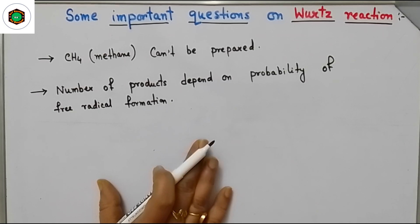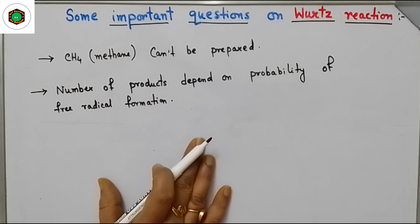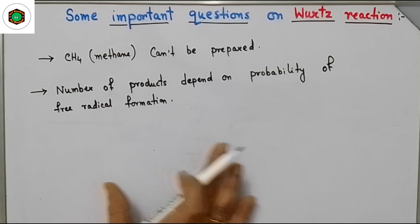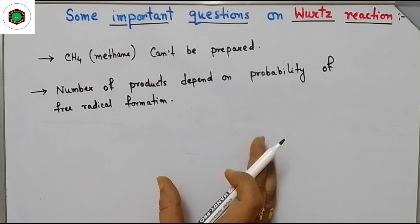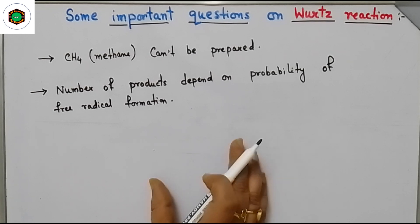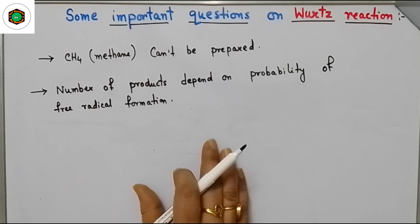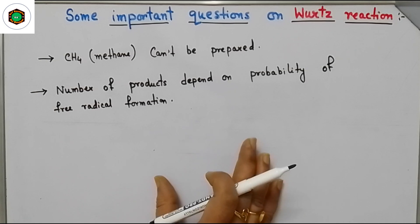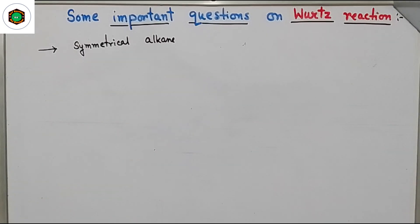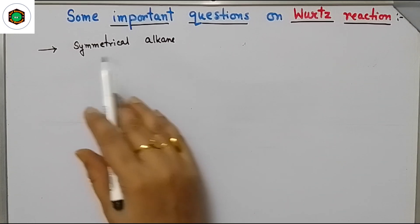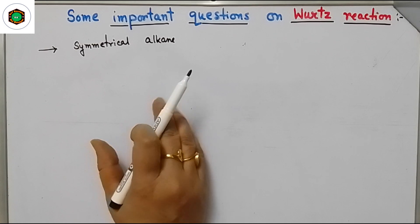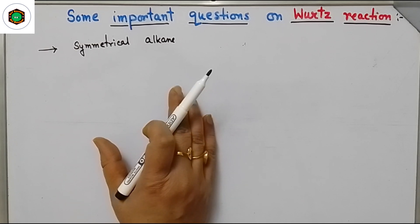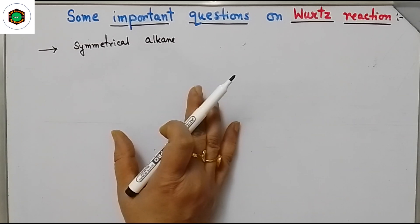This method is not suitable for the formation of alkane having an odd number of carbons, because forming such alkanes requires two different halides. This is a good method for preparation of symmetric alkanes; for unsymmetrical alkanes it is not good because it is difficult to separate the mixture.